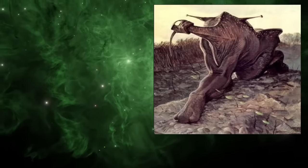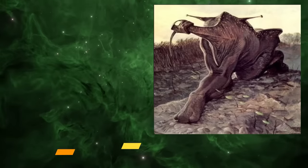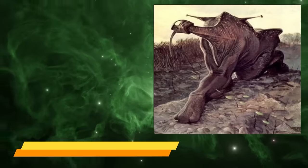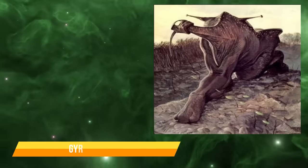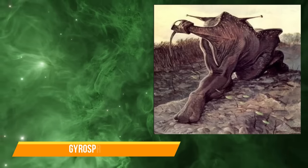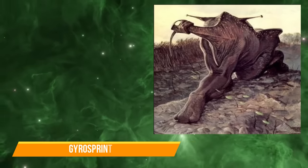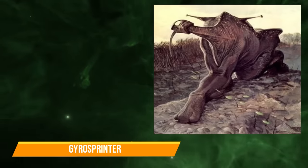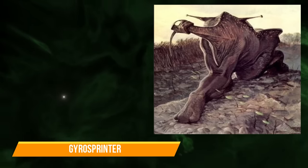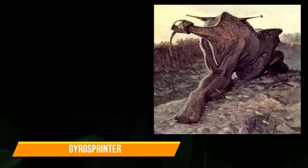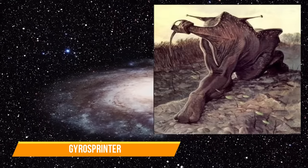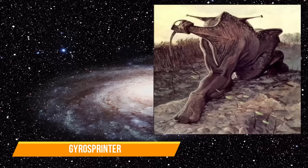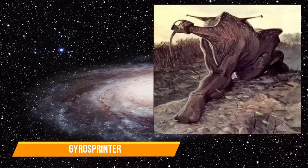Gyrosprinters are the fastest ground-dwelling organisms on Darwin IV, and can easily outrun many of their predators such as the arrow tongues and prong heads. Evolved from quadrupedal fauna, their legs have become fused at the forelimbs over millions of years, leaving them with literally one foot in front of the other. To counteract this, they have developed a set of hyper-developed halteres to keep in balance, allowing them to continue careening across their home biomes. Gyrosprinters are also extremely flexible and manoeuvrable, and can turn on a dime to elude most predators with ease.